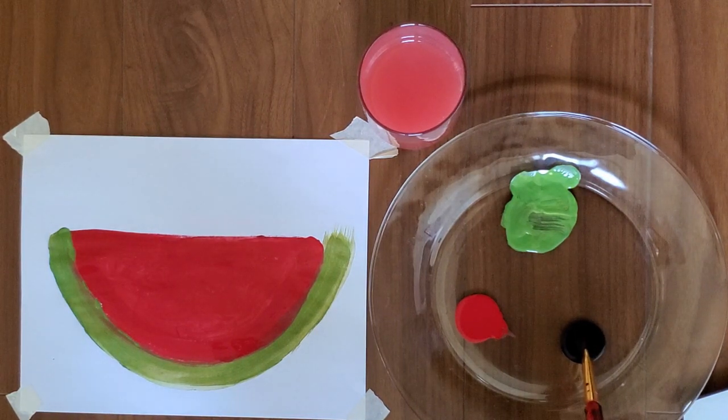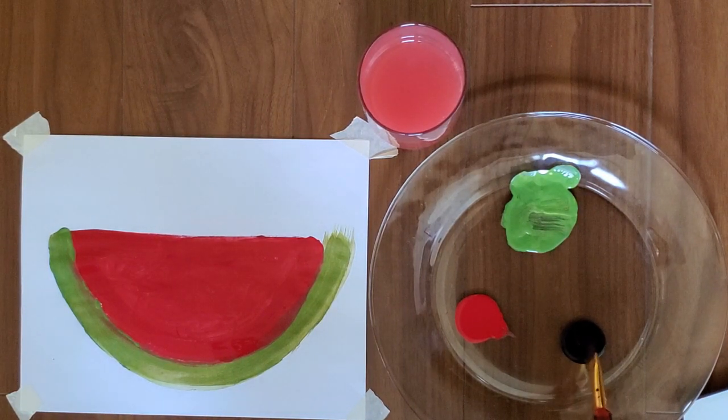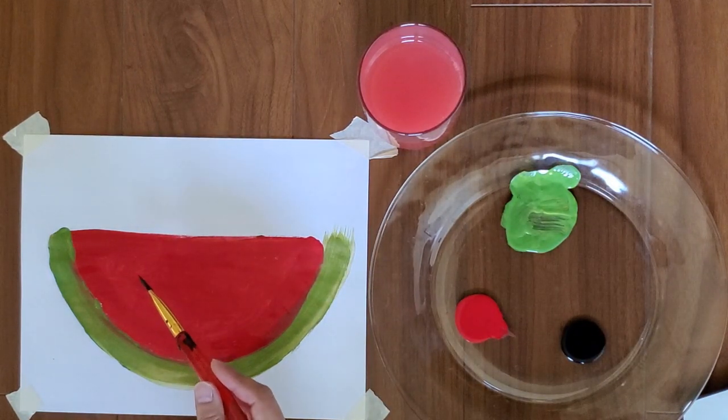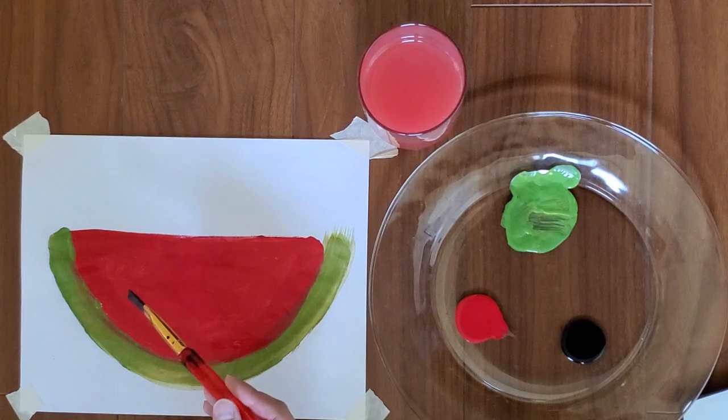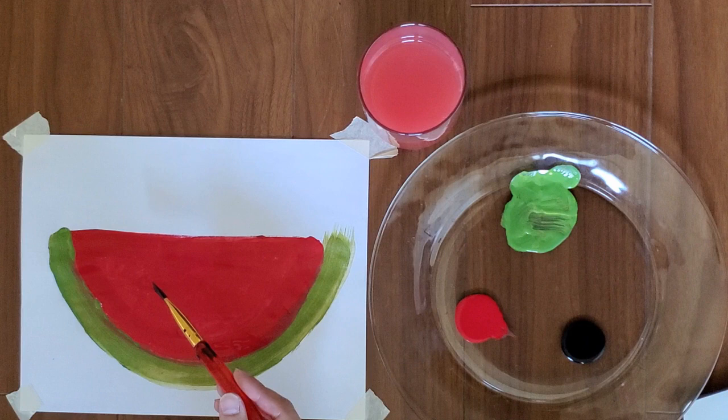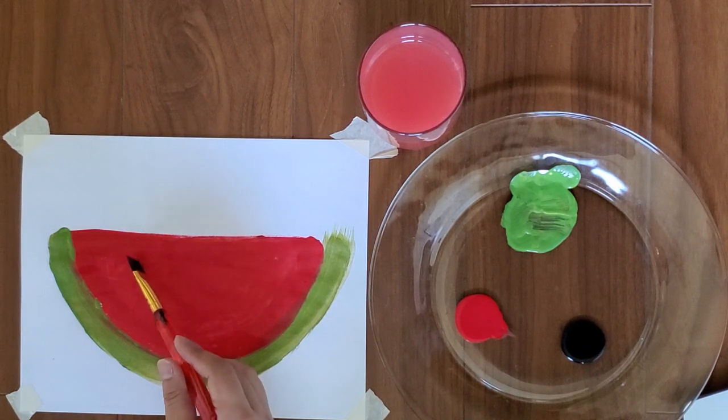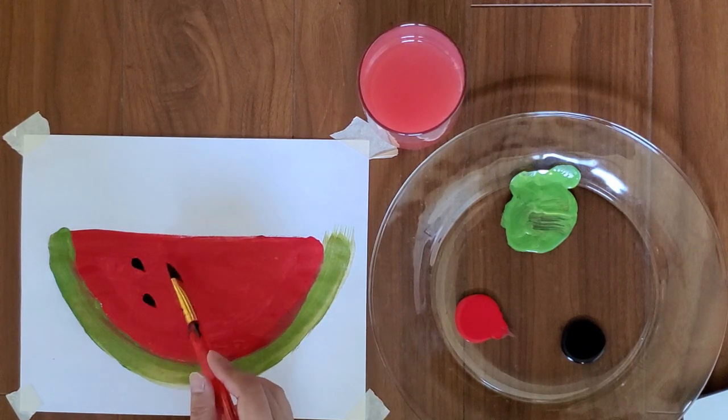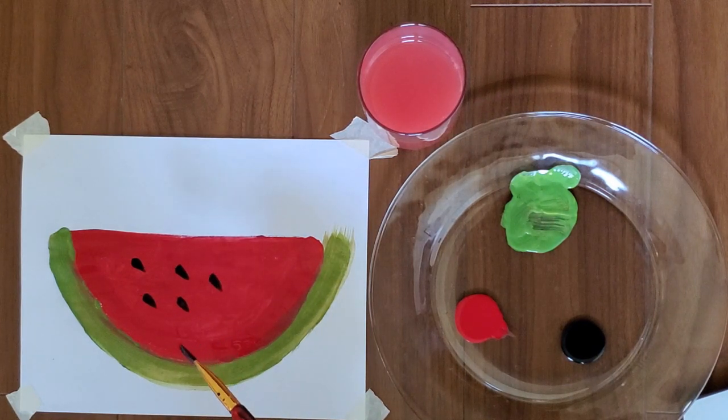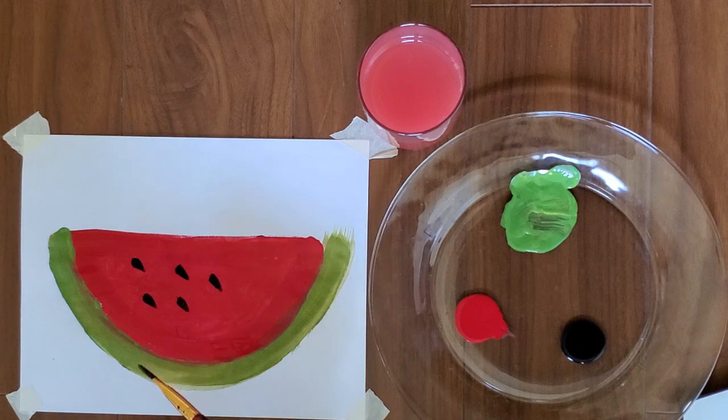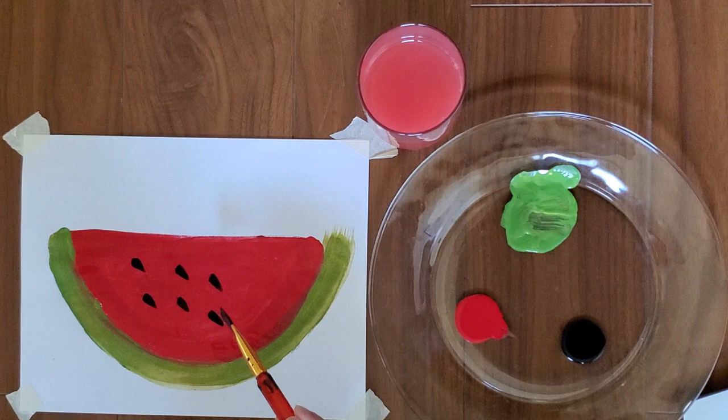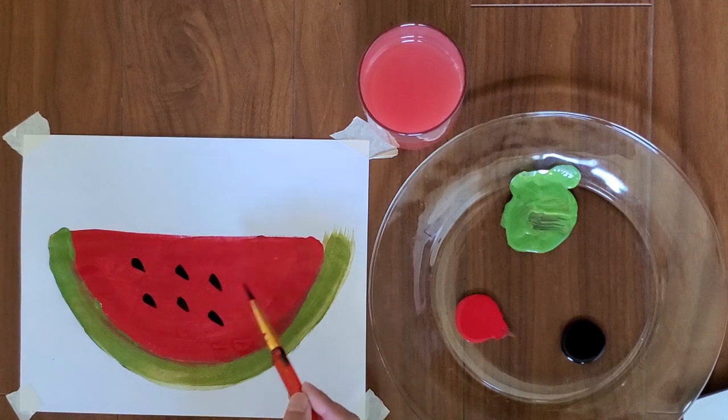We're going to dip the corner of our brush and we are going to make the seeds. For the seeds I have a little something for you guys. Let's see if we can figure it out. So the five year olds will draw five seeds and they are going to add three more seeds. The six year olds are going to draw six seeds and they will add four more seeds.